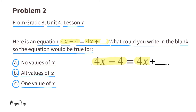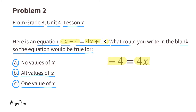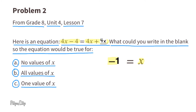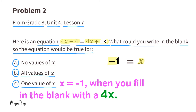Part C: one value of x. To make this equation true for just one value of x, we could put plus 4x in that blank. Subtract 4x from both sides and they cancel each other out, leaving negative 4 equals 4x. Divide both sides by 4, and that leaves us with x equals negative 1. That's one value of x.